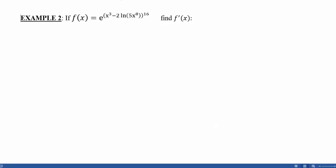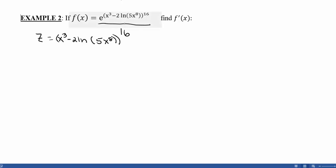Example 2. If f(x) equals e raised to the (x cubed minus 2 natural log of 5x to the 8th), all to the 16th power, find the derivative. Again, we see there are going to be multiple chain rules involved. We need to identify the outermost function so we know where to start. Here, the e function is the outermost function, which means we're in an e to the z type of chain rule situation. So z is the power of e: x cubed minus 2 ln of 5x to the 8th, all raised to the 16th power. The derivative f′(x) equals e to the z times dz/dx.